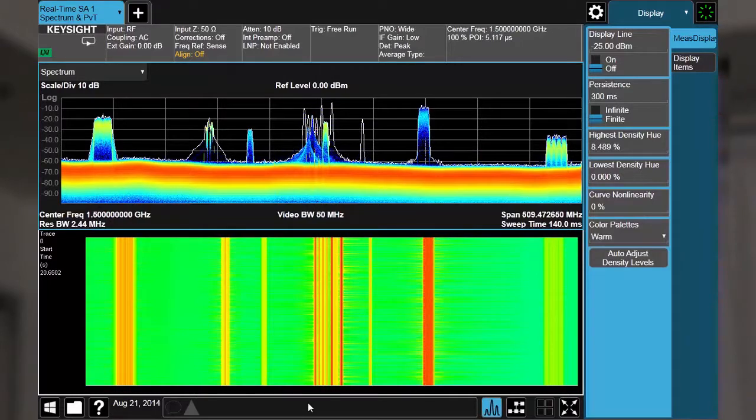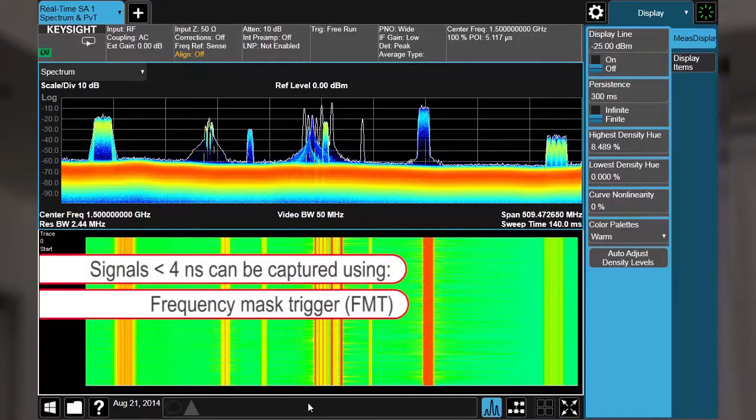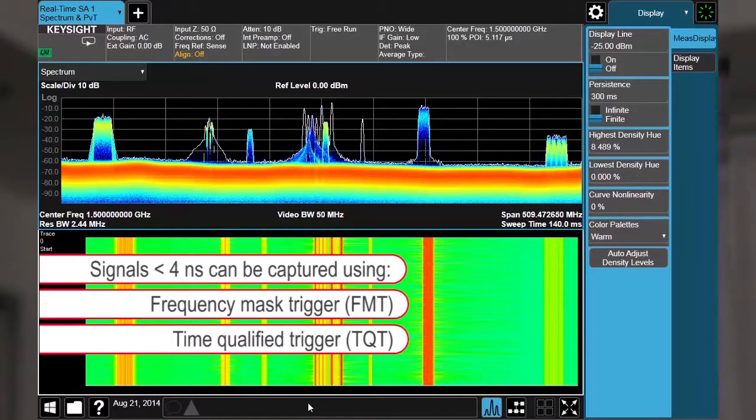Intermittent or interfering signals can be captured using frequency mask trigger and time qualified trigger, and combined with the 89600 VSA software to record and analyze these signals offline.